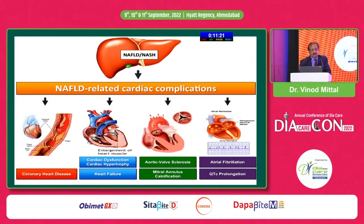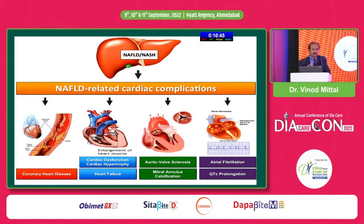Cardiovascular complications are not limited to coronary artery disease. There are many more: heart failure — specifically HFpEF — is coming up in a big way. After three to five years of diabetes, almost 40% of patients can have HFpEF. There is also cardiac dysfunction, cardiac hypertrophy, aortic valve stenosis, annular calcification, and atrial fibrillation, which is very common in patients with insulin resistance and NAFLD. QTc prolongation is also important — diabetic patients with CVD already have increased QTc, so medications that further prolong QTc, like azithromycin, should be avoided.